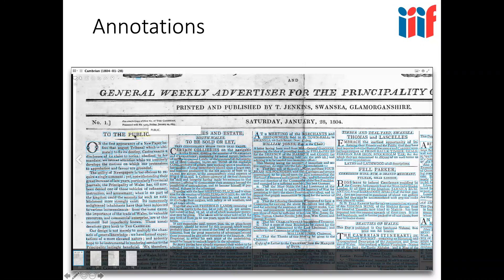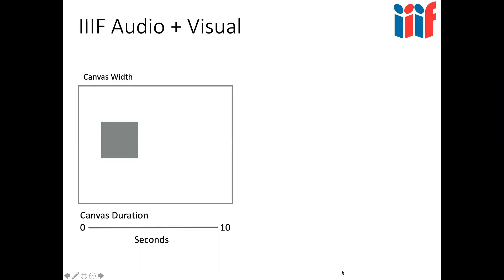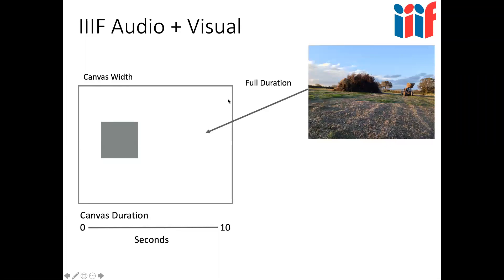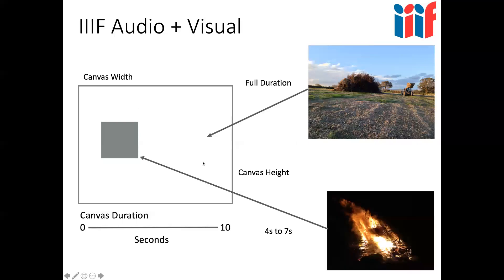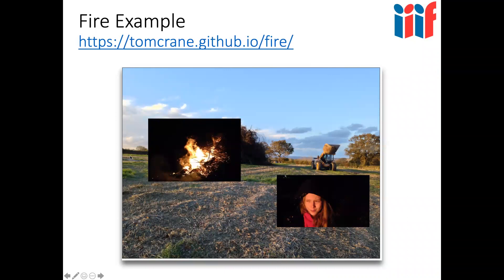With IIIF version 3, the way it handles audio-visual is by adding a canvas duration. Not only do we have a width and height for the image, we also have a duration, and this allows you to build up a presentation. You can start with just a picture painted at the full canvas width and height to be shown for the full duration, and then add other things. For example, a video of a fire burning is painted at particular coordinates and set to play from second four to second seven. As the presentation plays, you'll see different videos, text, and pictures being painted onto the canvas to give a full presentation.